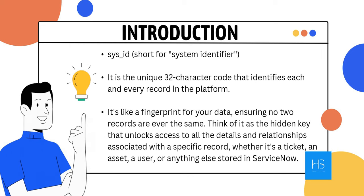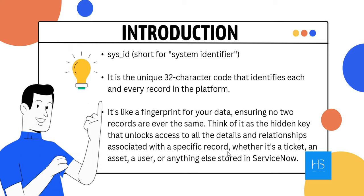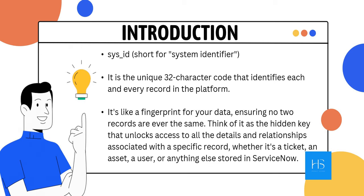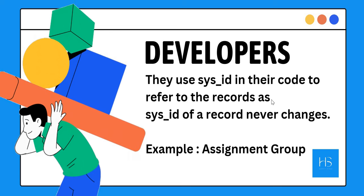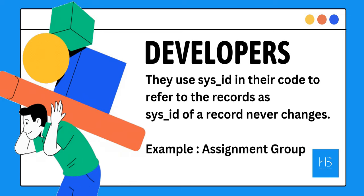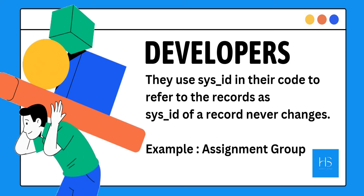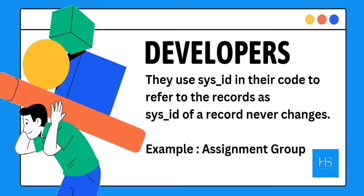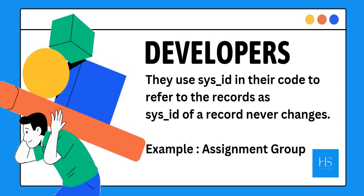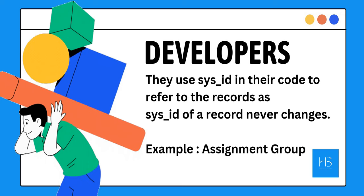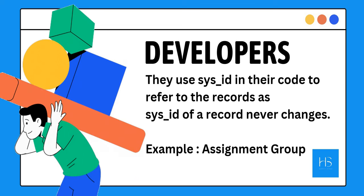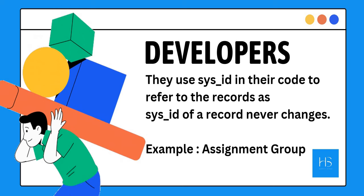Sys IDs are associated with each and every record — whether it's a ticket, asset, or a user. Any type of record will have a sys ID assigned to it. Why do developers use it? They use the sys ID in their code to refer to records. For example, if you have an assignment group and want to assign tickets to it through code, you can reference the sys ID instead of the name — because group names change frequently in organizations, but the sys ID will always remain the same for that assignment group, throughout the entire lifetime of that ServiceNow instance.